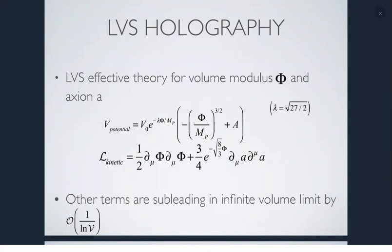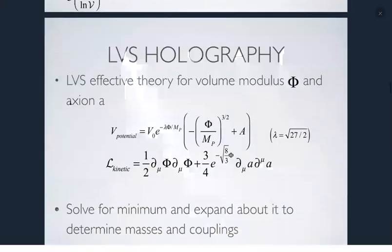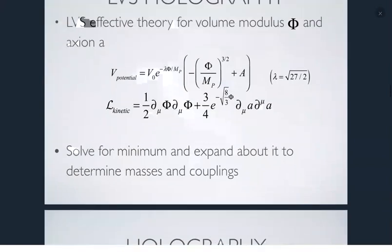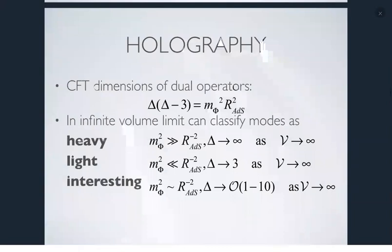The reason I want to jump to the potential is I really want to focus on the holographic question: given an AdS minimum, if we look at this holographically, can we tell whether some perturbations are consistent or not? We assume we can use AdS/CFT and see what interesting things we can get from it. The AdS/CFT dictionary tells us the theory requires dual operators, and the dimensions of these operators are set by the masses of the fields relative to the AdS scale.